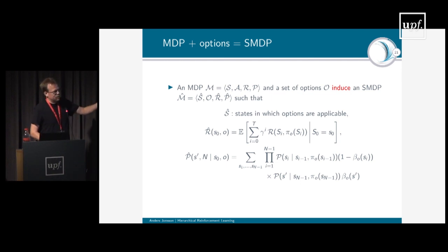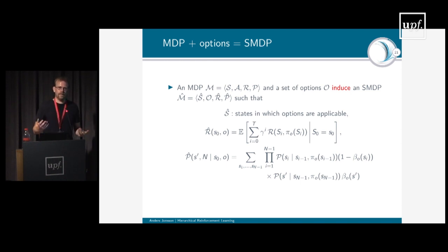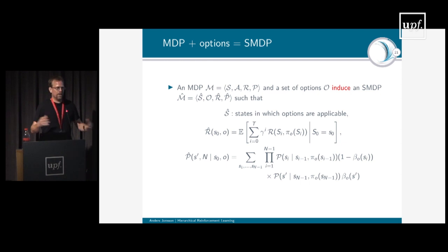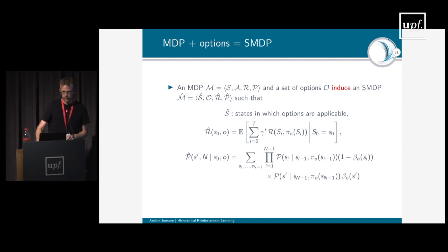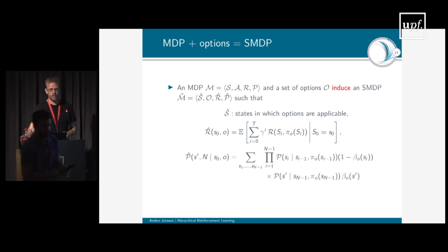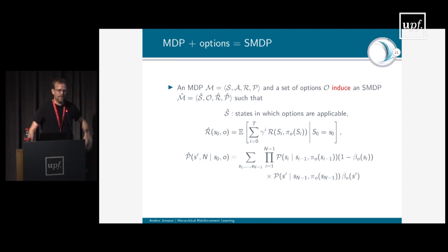The option MDP uses subscript O to indicate it's local — the state space of the option might be smaller than the full state space, and the action space might also be smaller. The transition function is basically the projection of the MDP transition function to this potentially smaller state-action space. We need to define an option reward function that makes the agent solve its associated subtask. One idea is to define a reward function that assigns reward when we reach the correct termination state of the option — for example, giving reward when reaching the lower doorway, even though in the original MDP there's no reward for reaching that state.